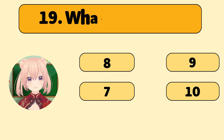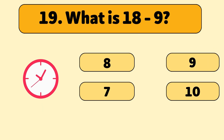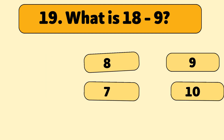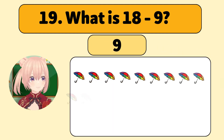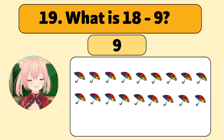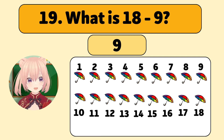What is 18 minus 9? The answer is 9! We start with 18 umbrellas and take away 9!